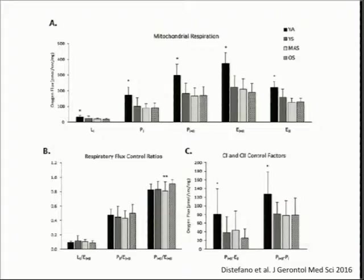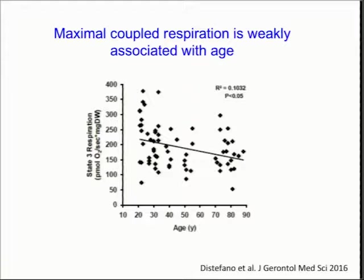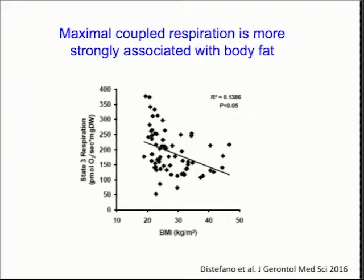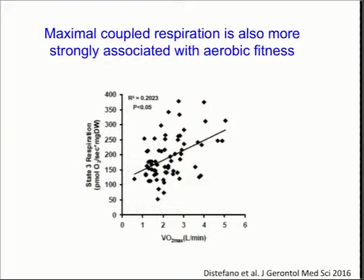When we do a correlation of all subjects with age, up to about age 90, with maximal coupled respiration, there's only a very weak correlation with age. Stronger with BMI, but still relatively weak, with BMIs up to almost 50. What factors other than BMI affect mitochondria? Probably physical fitness — VO2 max, or cardiorespiratory fitness, strongly relates to mitochondria function. This makes sense because your ability to extract oxygen during maximal exercise contributes to VO2 max.